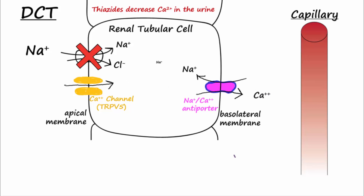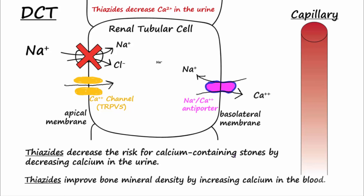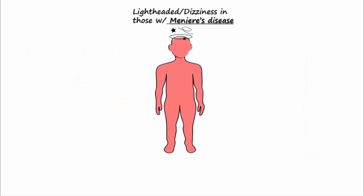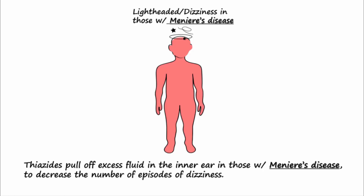Therefore, treatment with thiazides decreases calcium levels in the urine, lessening the risk for calcium stone recurrence. Since thiazide treatment increases the reabsorption of calcium into the blood, it has the added benefit of improving bone mineral density for those at risk for osteoporosis. Thiazides can also be used to reduce excess fluid in the inner ear in those with Meniere's disease to decrease the number of dizzy episodes in these patients.